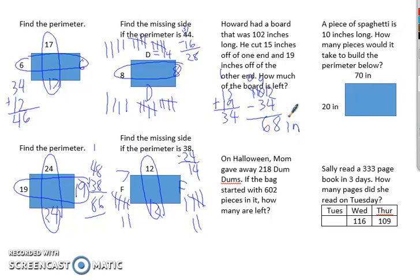Halloween mom gave away some. How many are left? Gave away and left tell me we're both subtracting. Six hundred and two minus two eighteen. Got to borrow again at the beginning. Two comes back, borrows one, ten, makes him nine. Twelve minus eight is four. Nine minus one is eight. Five minus two is three. Three hundred and eighty-four dum-dums left.